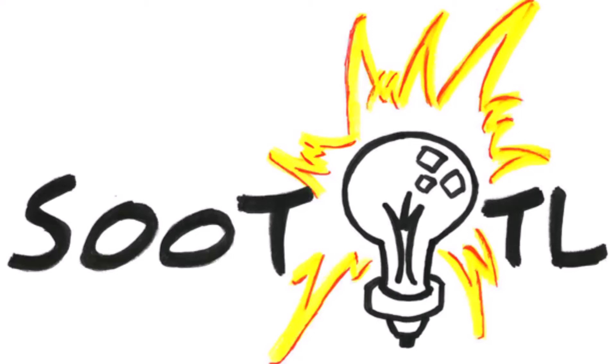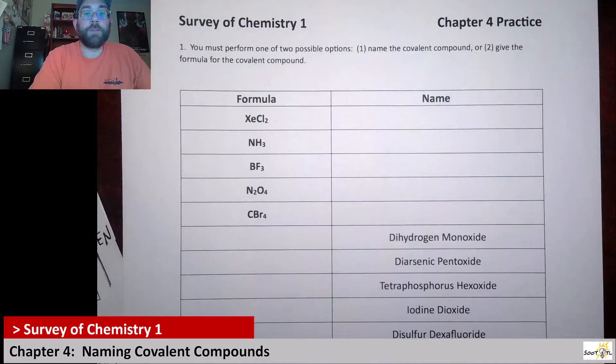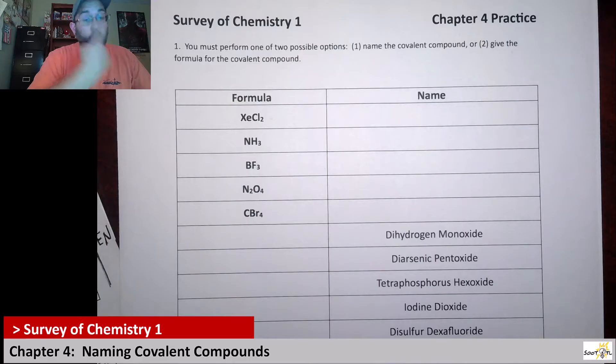This is a Suitotal production. Hello surveyors, this is going to be our fourth practice video for chapter 4. Here we're going to practice with naming covalent compounds.